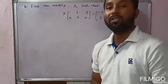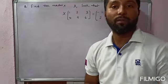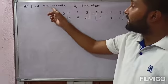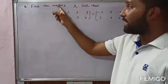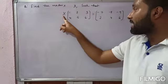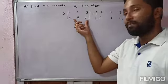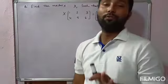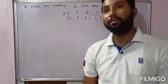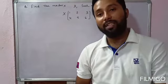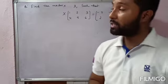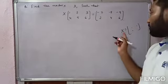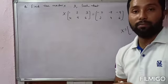Now one more example, but this is a different type — not related to nth power. The question is: find the matrix X such that X multiplied by a given matrix equals another given matrix. Note the difference: find the value of x gives a constant, but find the matrix X means you must find x in matrix form.